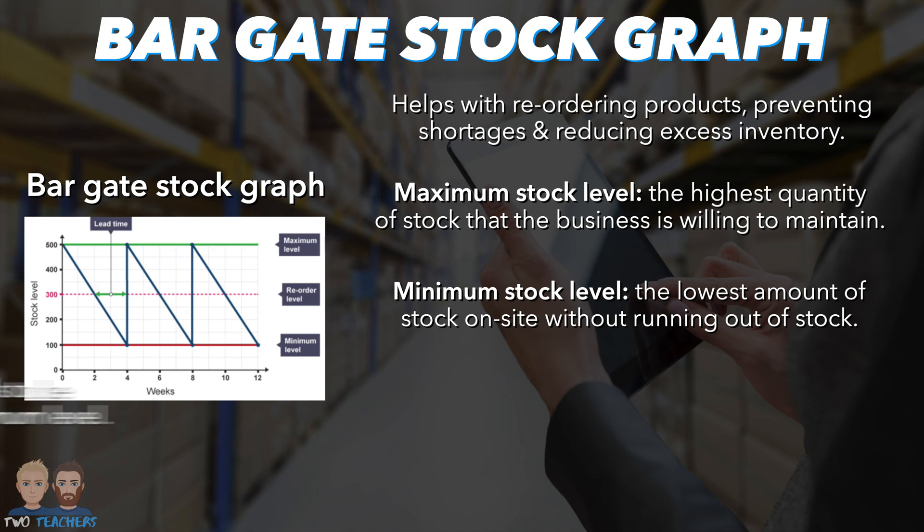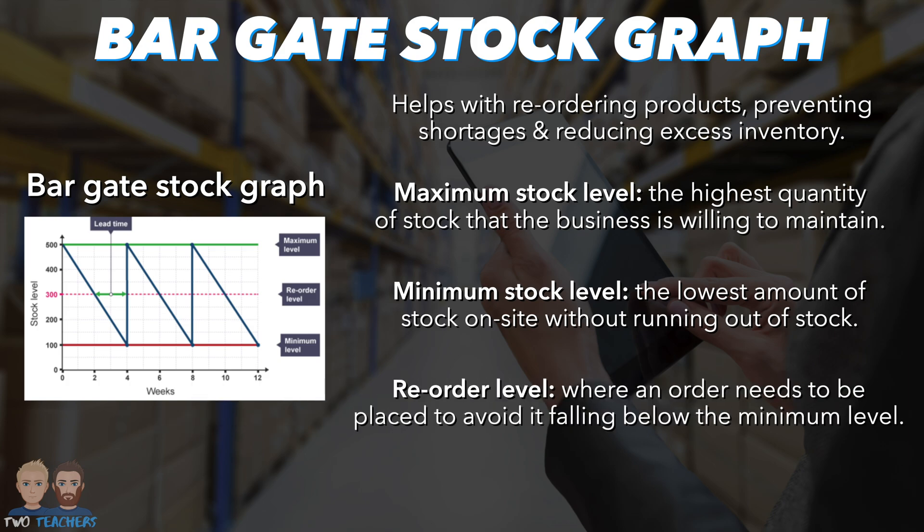Next is the Reorder Level. The Reorder Level is the point at which a business must initiate the order process to replenish stock before it falls below the minimum level. In the graph, this occurs when there are 300 units remaining.